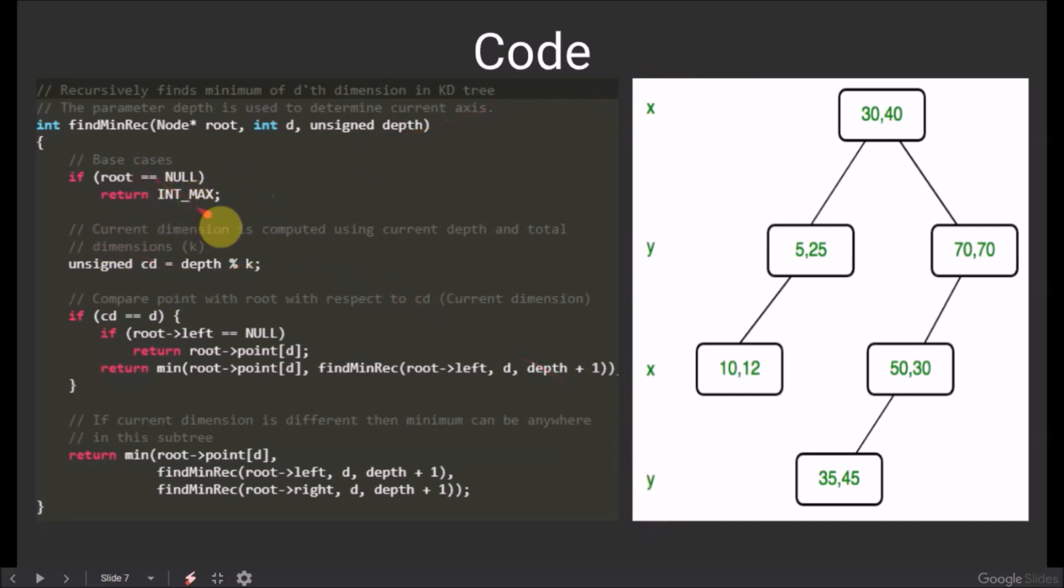The current dimension of the node in the tree can be found out using the formula, depth modulus k. Now we have two cases. Either the current dimension is equal to the depth, or it is not.